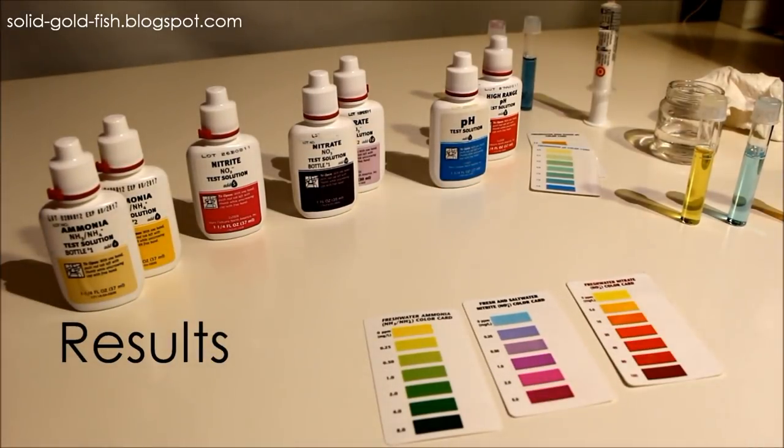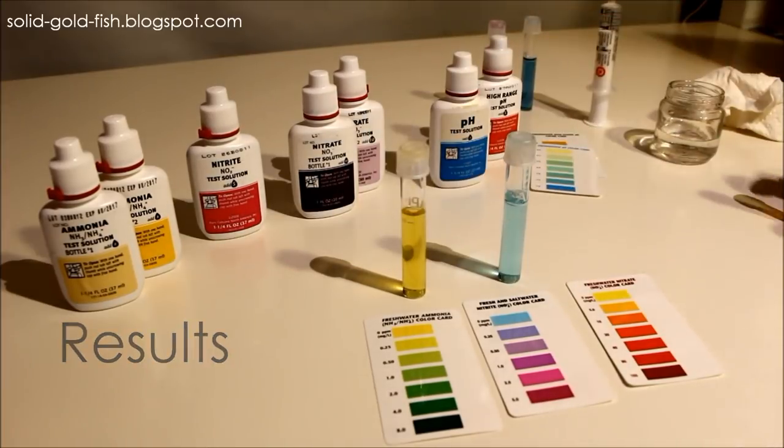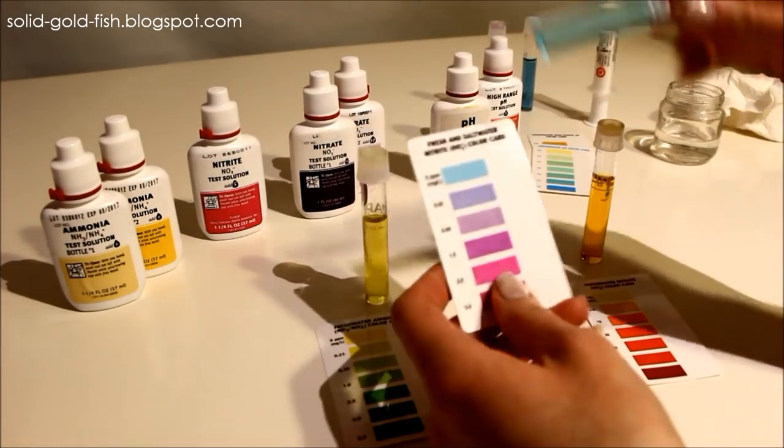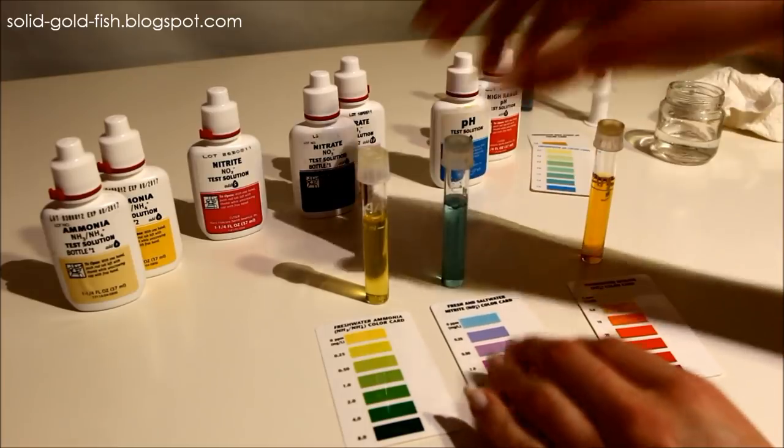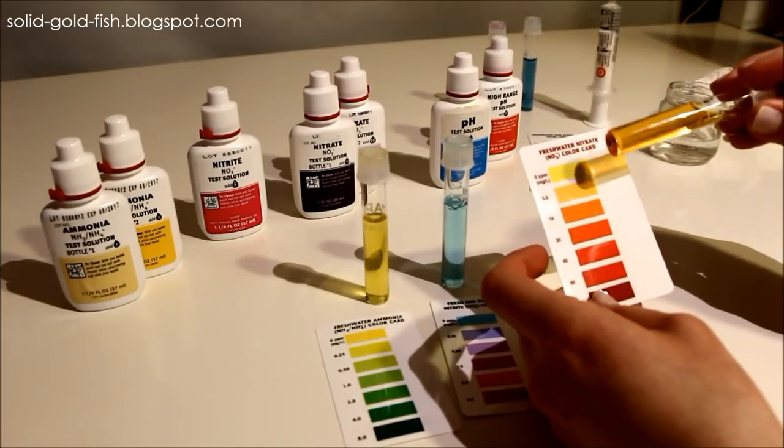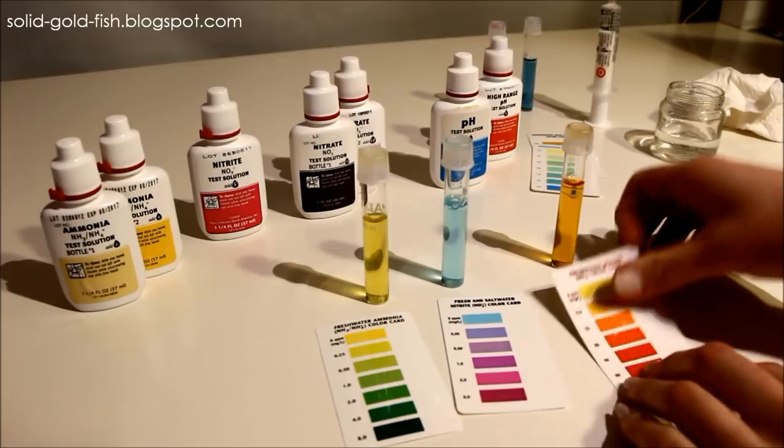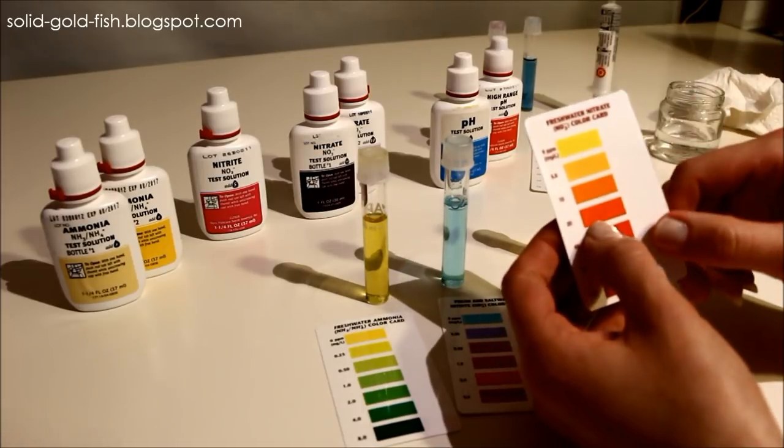It has been five minutes and we can read the results from these. The ammonia is at zero, which is good. Nitrite is also at zero. You always want ammonia and nitrite to be zero in a cycled aquarium, they always should be. Nitrate is five, which is pretty good.